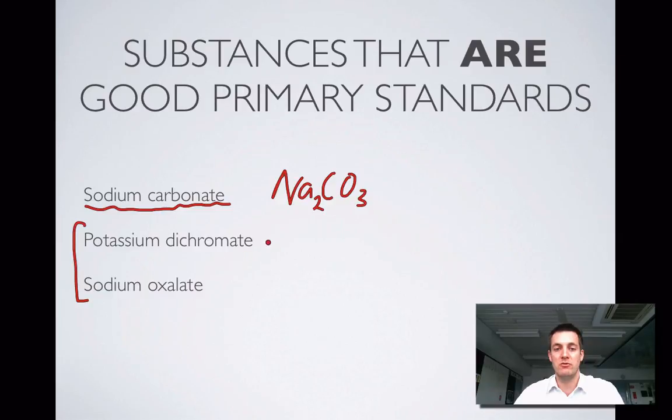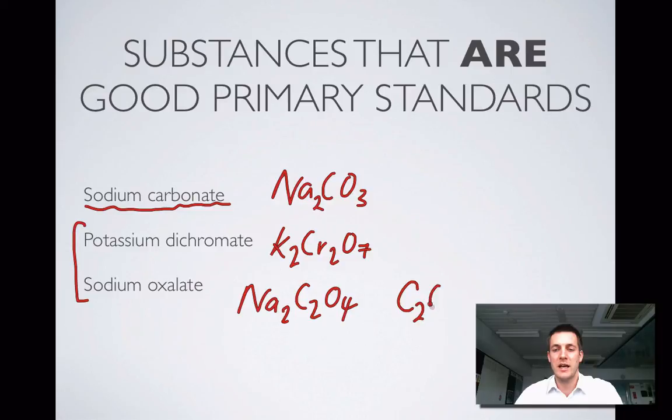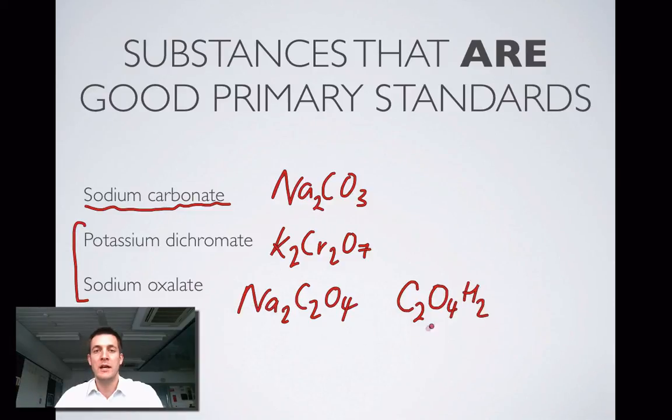These two are mainly used in redox. Potassium dichromate (K2Cr2O7)—in fact I could equally well use sodium dichromate—it's this dichromate ion that is an oxidizer and so it's used in redox titrations. It's quite stable, unlike potassium permanganate. Also sodium oxalate (Na2C2O4). This is kind of used in acid-base titrations in the sense that oxalic acid (C2O4H2) can be used in acid-base titrations, but normally we'll see this oxalate ion being used in redox titrations.